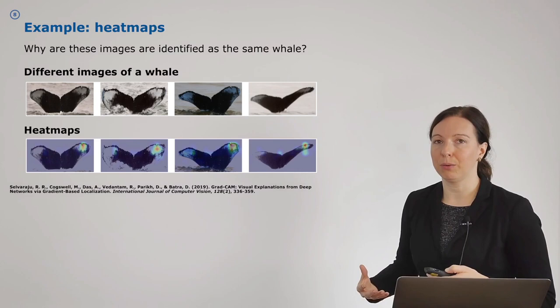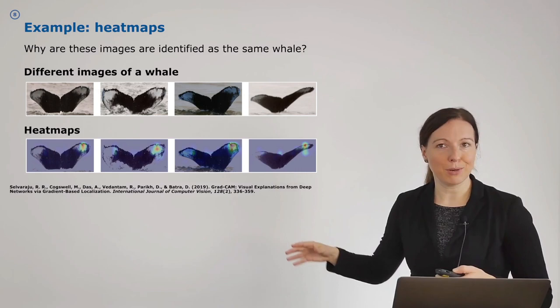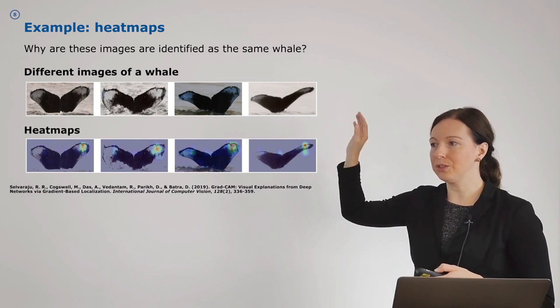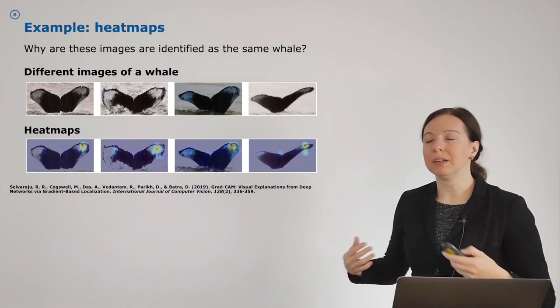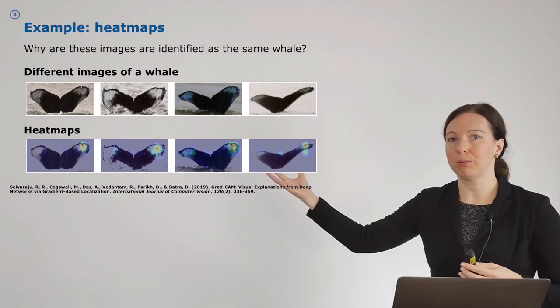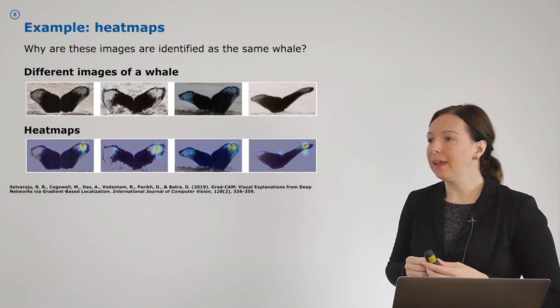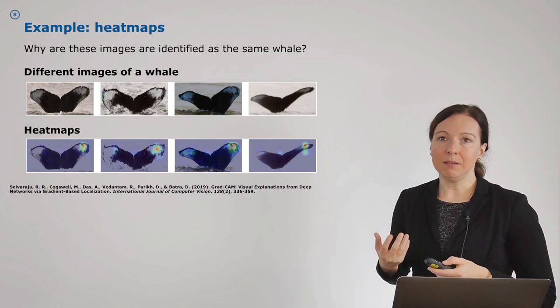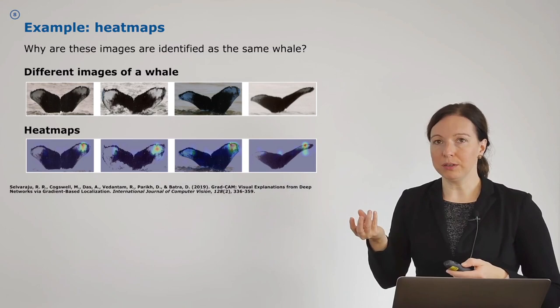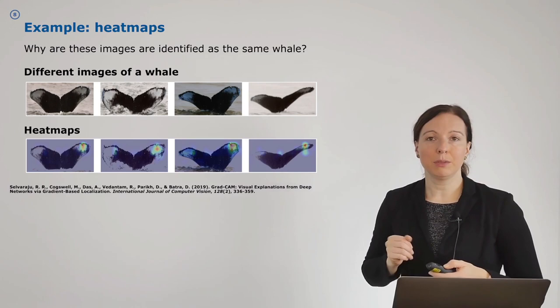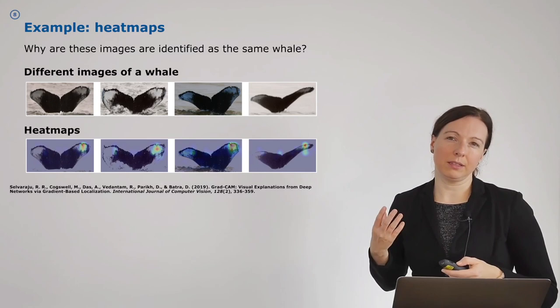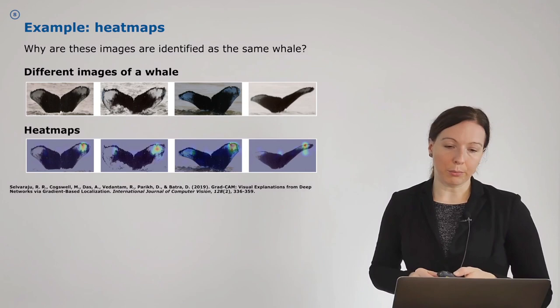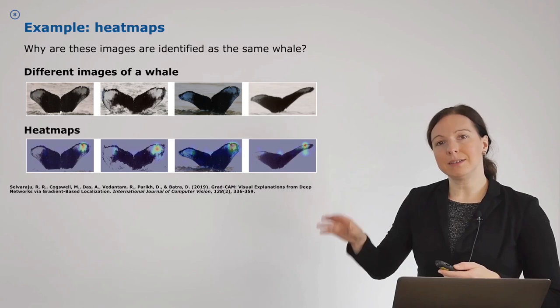As an example, heat maps can indicate why four images are identified as the same whale. A whale fluke is very specific to a whale — if you have certain patterns and another fluke with the same patterns, it's very likely to be the same whale. Researchers use flukes to track the spatial-temporal migration of whales. What you can see here are heat maps for four images, with one hot spot in red in each image, indicating which location the algorithm thinks is important for the decision to identify all four images as the same whale — specifically, a spot in the upper right corner.